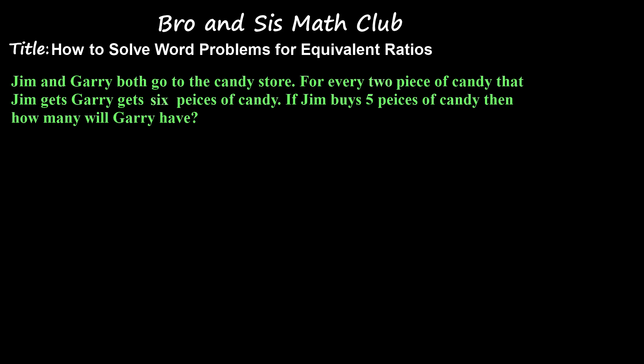Okay, so we know that there's two people and that they're Jim and Gary. Now they both go to the candy store and for every two pieces of candy that Jim gets, Gary gets six pieces of candy.